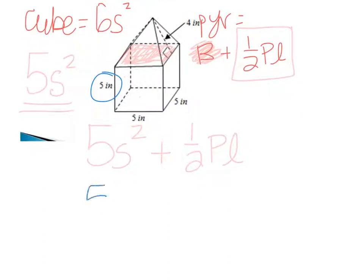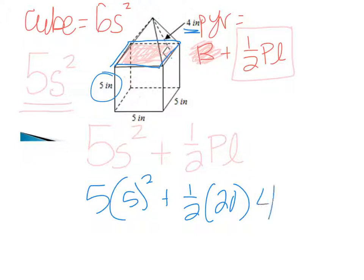So 5² plus half of the perimeter. The perimeter of our pyramid is 5, 10, 15, 20, and it says it has a slant height of 4, so we put it right there.